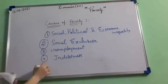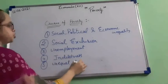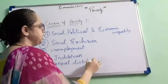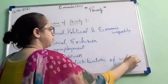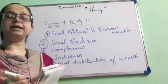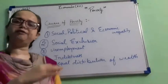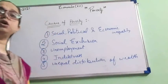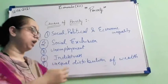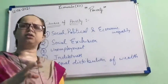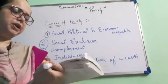Another important cause is the unequal distribution of wealth. The distribution of wealth is unequal — the rich keep getting richer and the poor keep getting poorer. The increasing gap in wealth and income distribution is a very important cause of poverty.